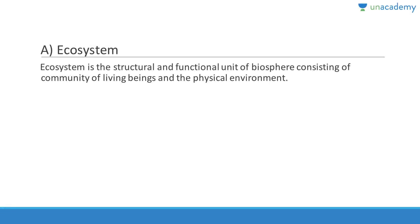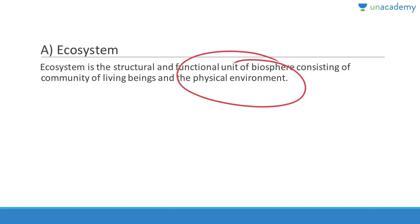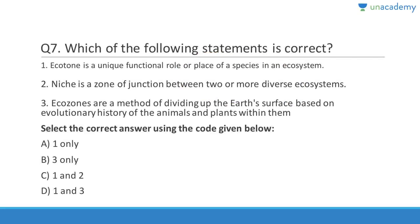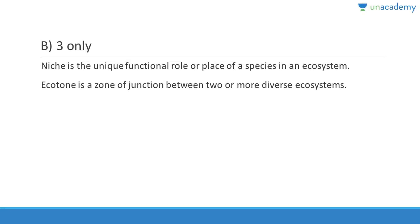Question seven: Ecotone is a unique functional role or place of a species in an ecosystem — that is wrong; that is a niche. Niche is the zone of junction within two or more diverse ecosystems — that is ecotone, so they have reversed one and two. Ecozones are a method of dividing up Earth's surface based on evolutionary history of animals and plants. Answer is B, three only. Niche is the unique functional role or place of a species in an ecosystem, and ecotone is the zone of junction between two or more diverse ecosystems.